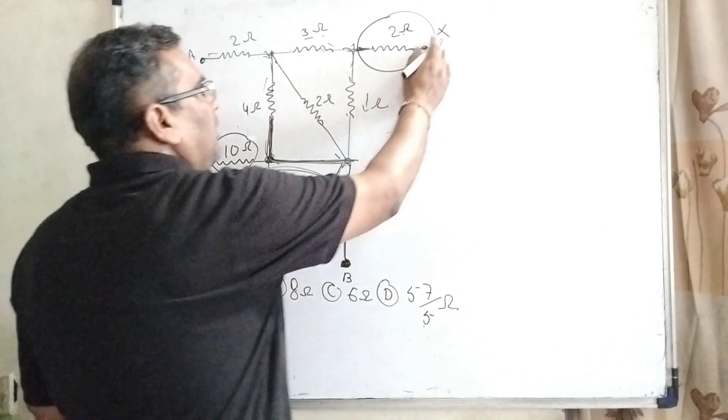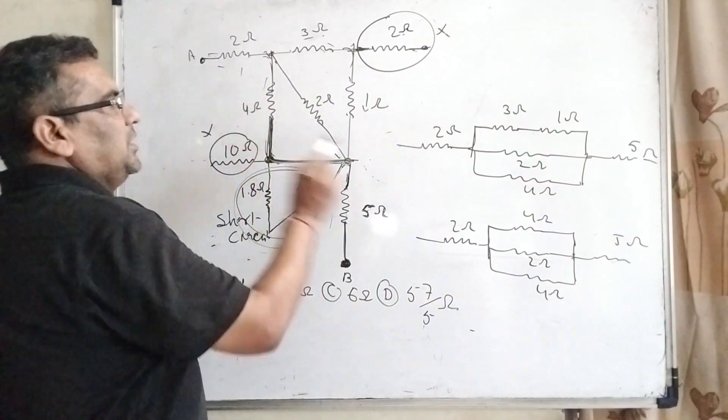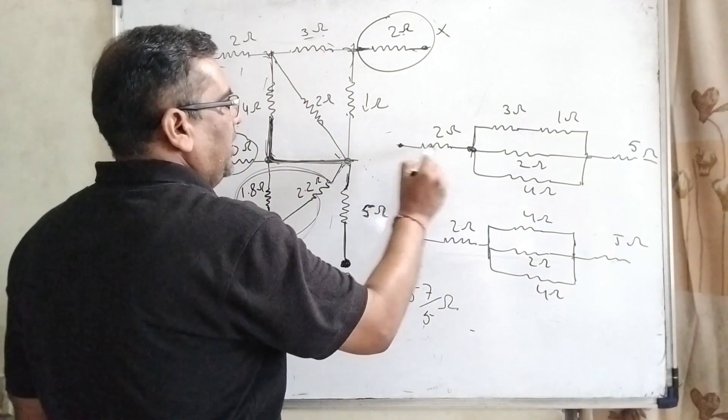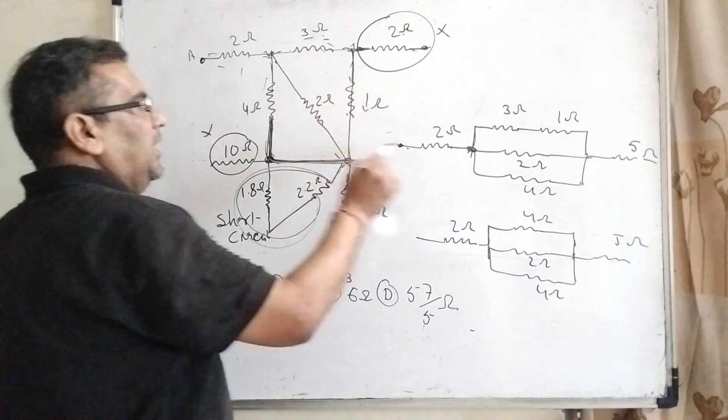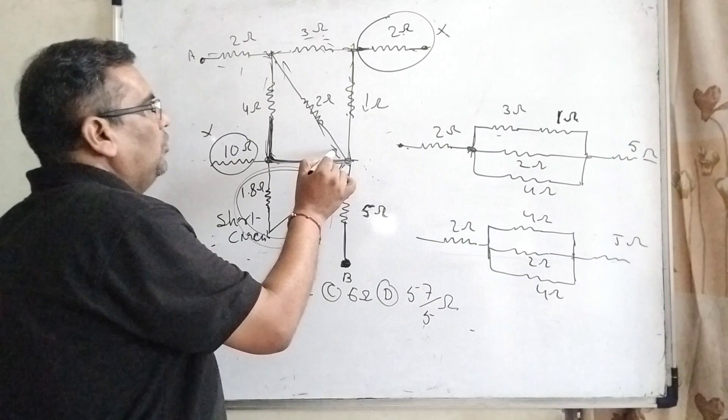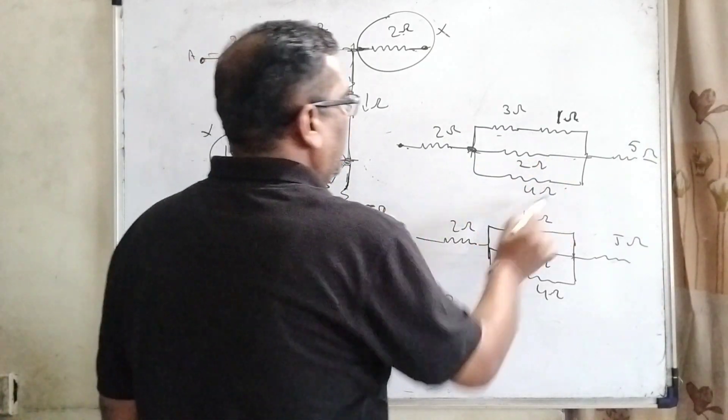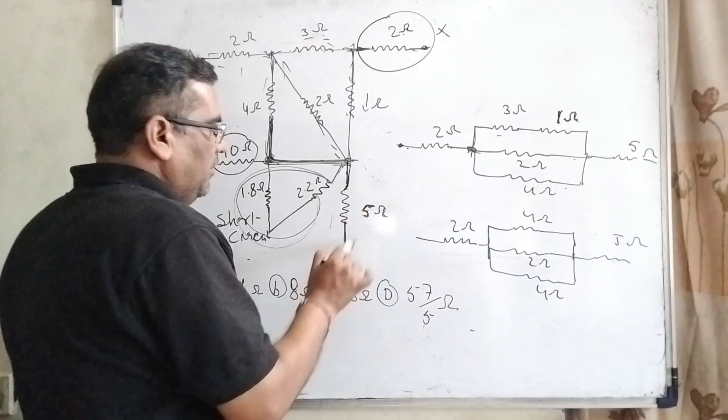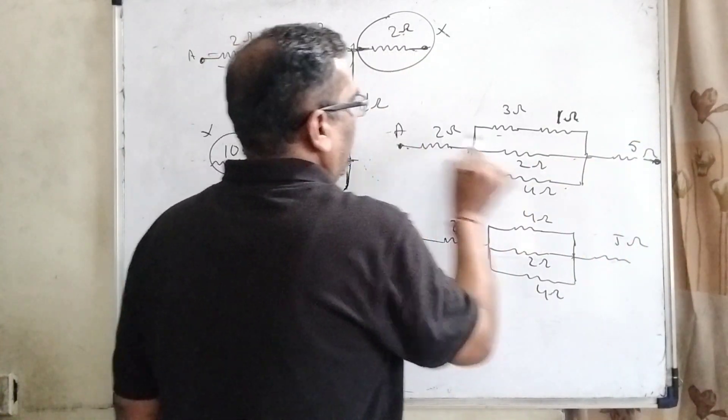So now again redraw this diagram. Now you can see that 2 ohm resistance present in this point and here 3 ohm resistance and 1 ohm directly connected, so they are in series. And here 2 ohm resistance and here 4 ohm resistance. And now lastly 5 ohm connected to the end terminal, here A and B.